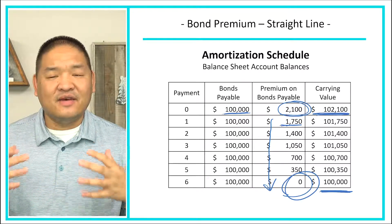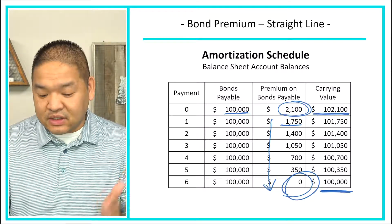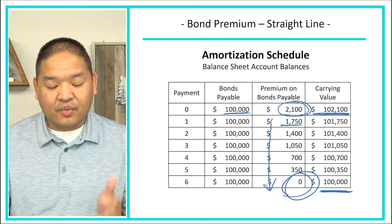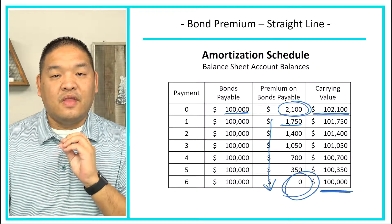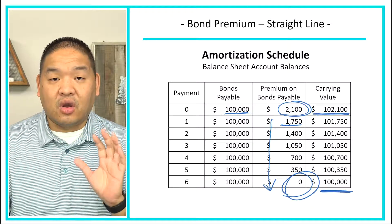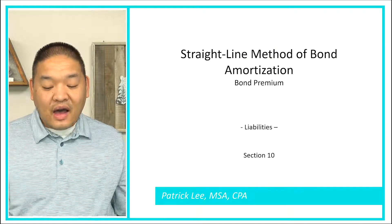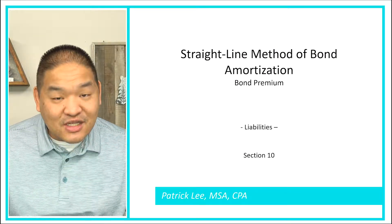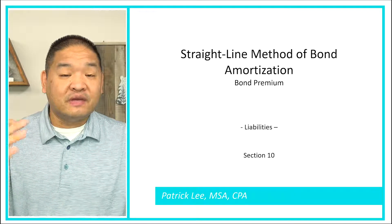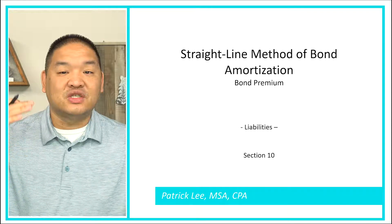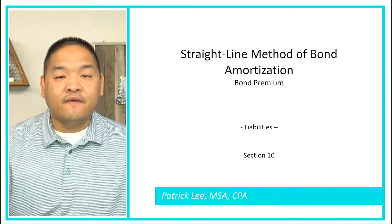We're chomping down that premium on bonds payable until the very end, when we owe nothing on the premium and only owe that principal amount based on its face value. That is a look at the straight line method of bond amortization for interest when it comes to a bond premium. The best way of getting this is just keep practicing and doing the calculations — watching alone doesn't really help.